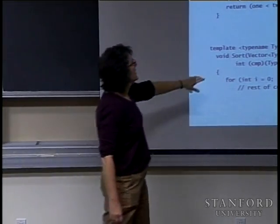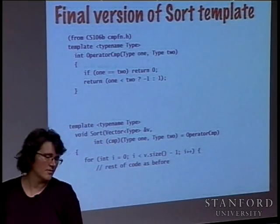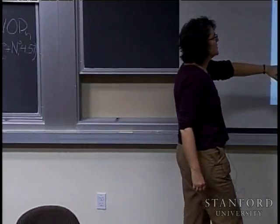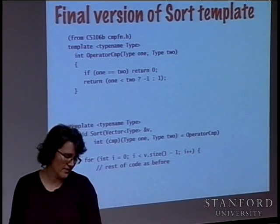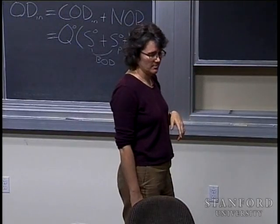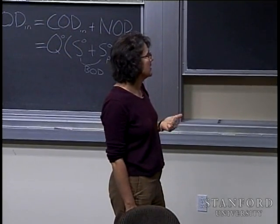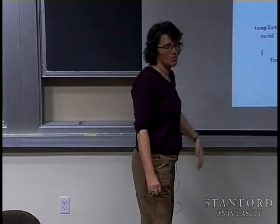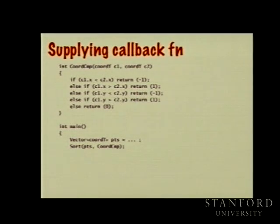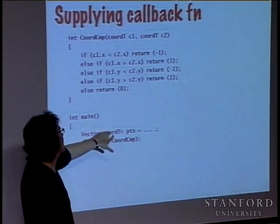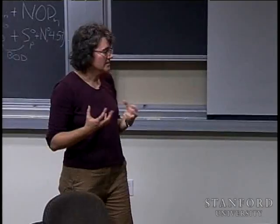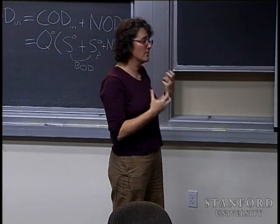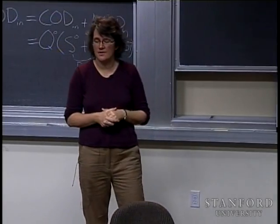I change the prototype of sort: it takes a vector of the type, a comparison function taking two arguments of that type and returning int, and I give that a default argument of operator compare. When somebody invokes sort without passing a second argument, the code uses the default — operator compare is instantiated for whatever the type is. So for string it builds an operator compare on strings; for int or double it uses the built-in operators. If you try to sort a vector of coordinates without passing a comparison function, you'll get a compiler error because operator compare can't be instantiated for a struct type.